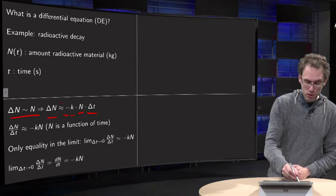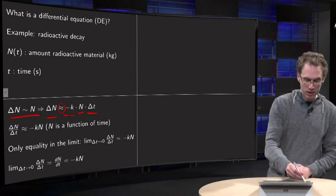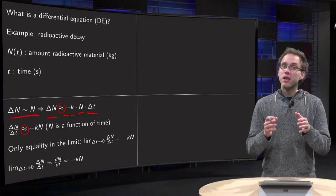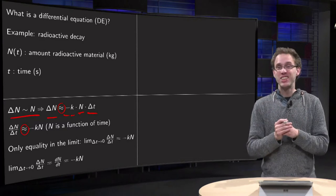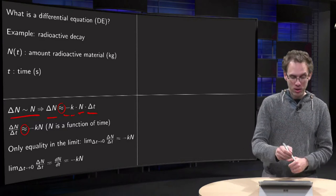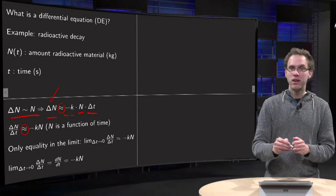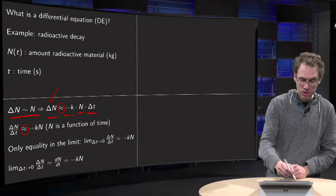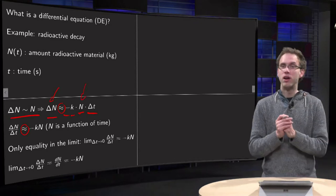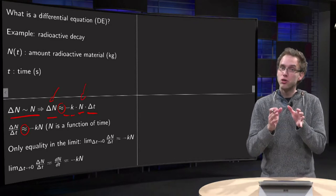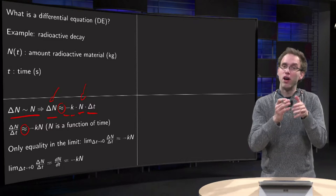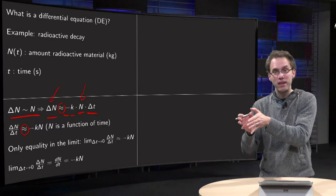And why is this approximately equal here, divided by delta t? Well, your capital N is changing over time. So your delta N will not be the same for different times. So this N over here is not constant. So it is only approximately equal. At the start of your interval, you will have more material than at the end of the interval.